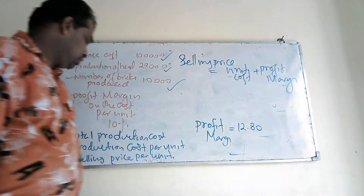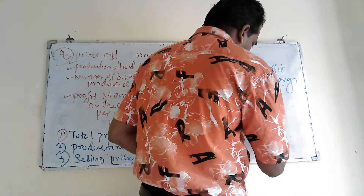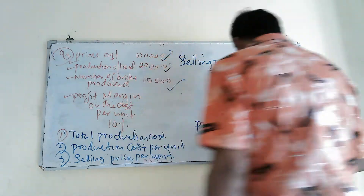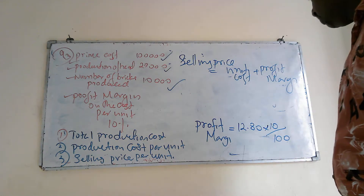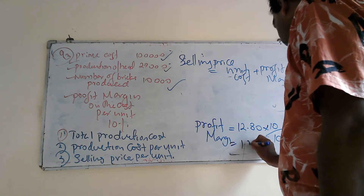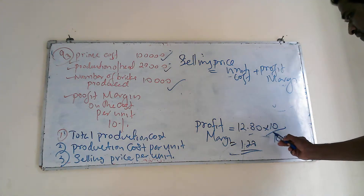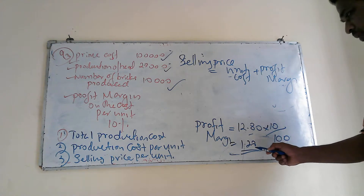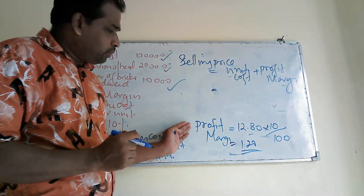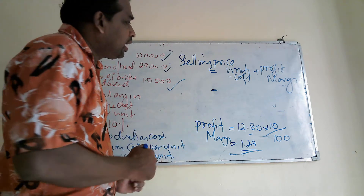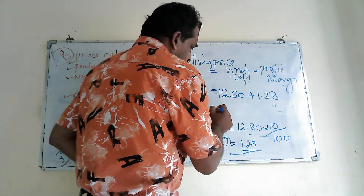The unit cost is 12.8 rupees. You take 10% from the unit cost, which equals 1.28 rupees. This is the working for the given question. So your unit cost is 12.8 rupees plus profit margin of 1.28 rupees.